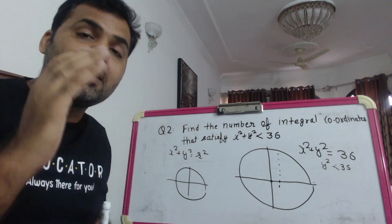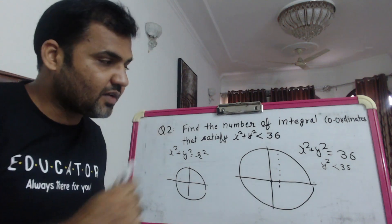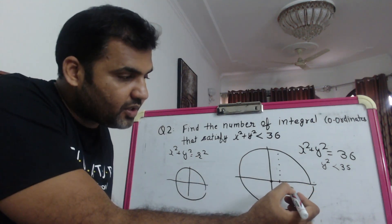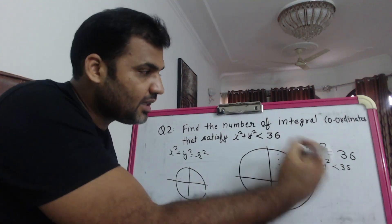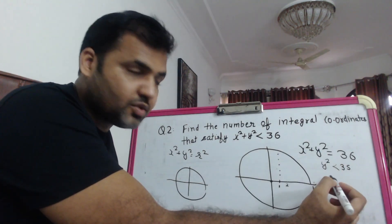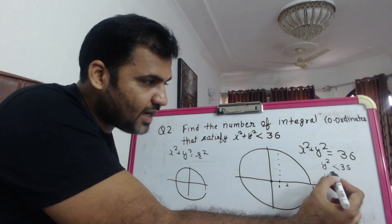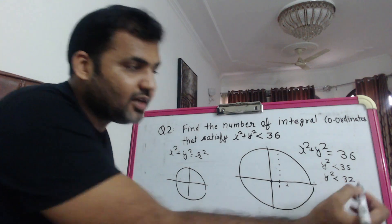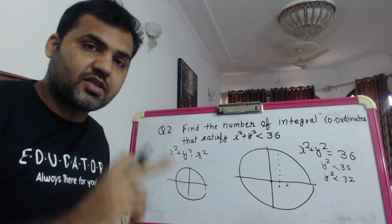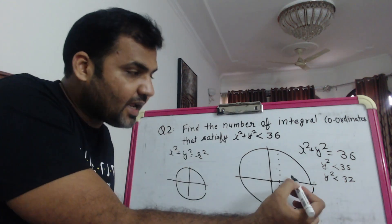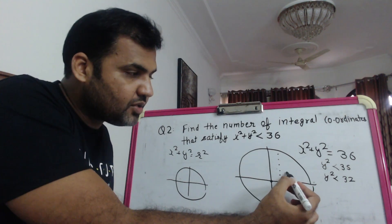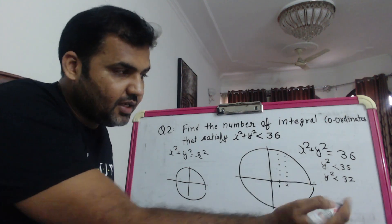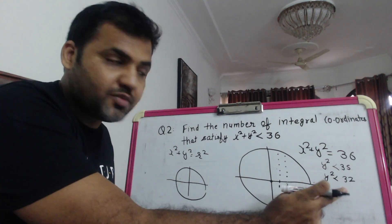If I put x = 2, then y² will be less than 36 - 4 = 32. So whatever values of y for which y² is less than 32 - again y can be 1, 2, 3, 4, and 5, because y² must be less than 32, and 5² = 25 which is still less than 32. So y can still go from 1 to 5.